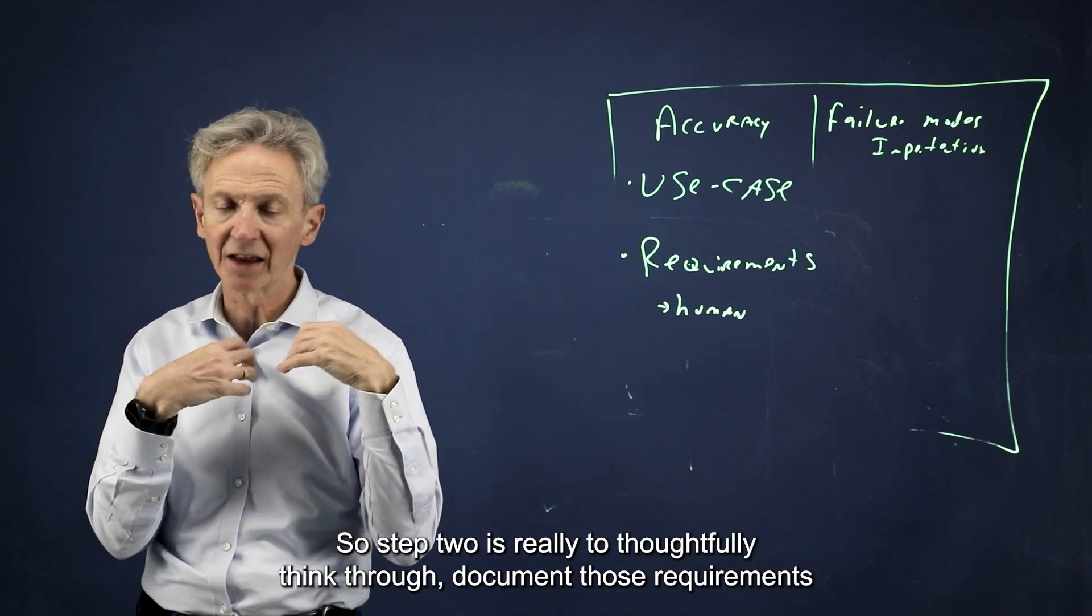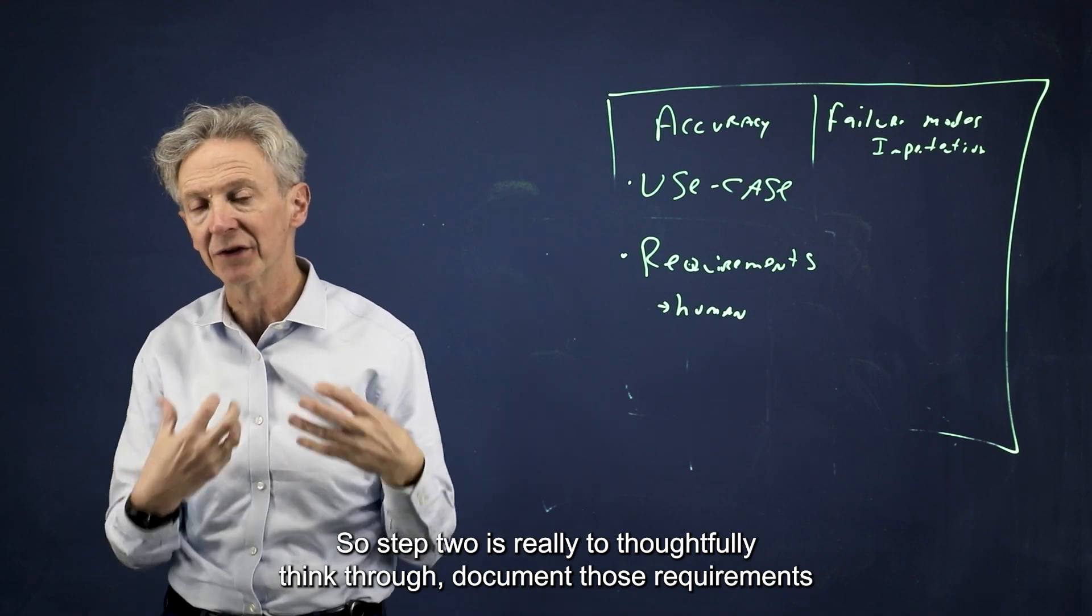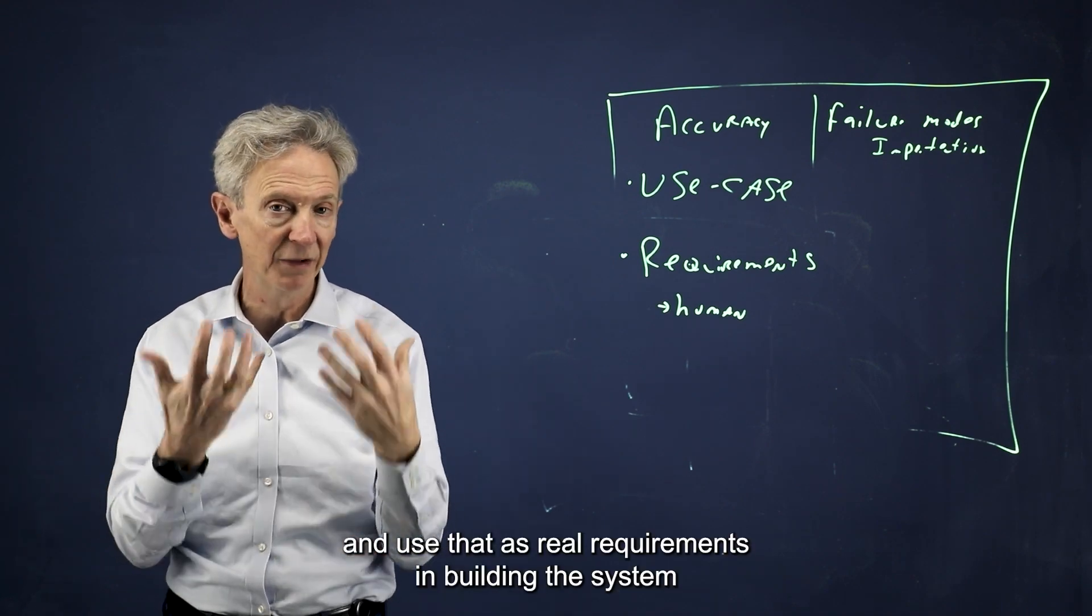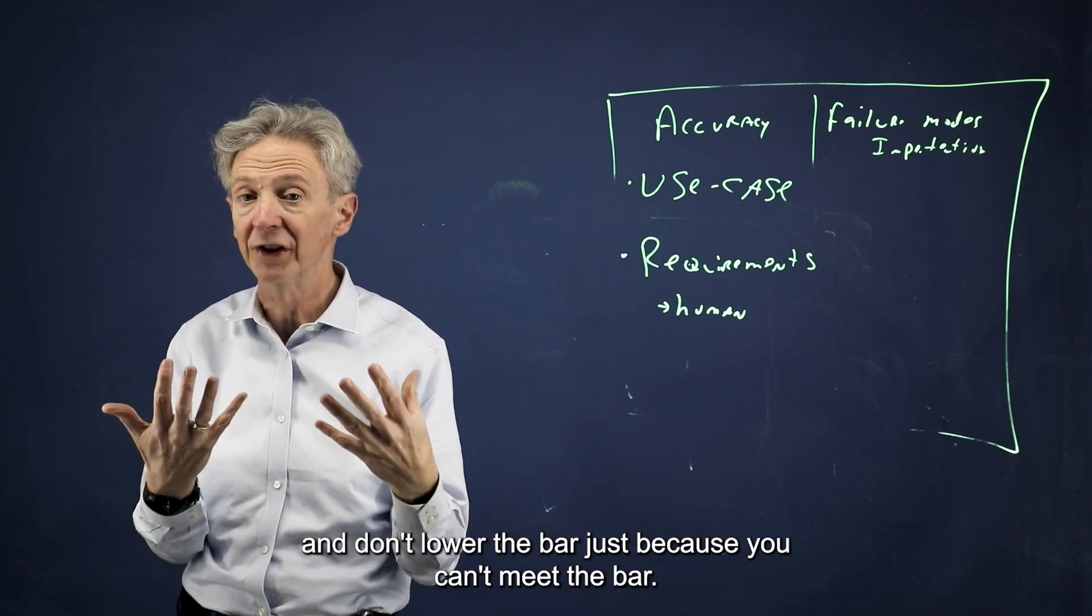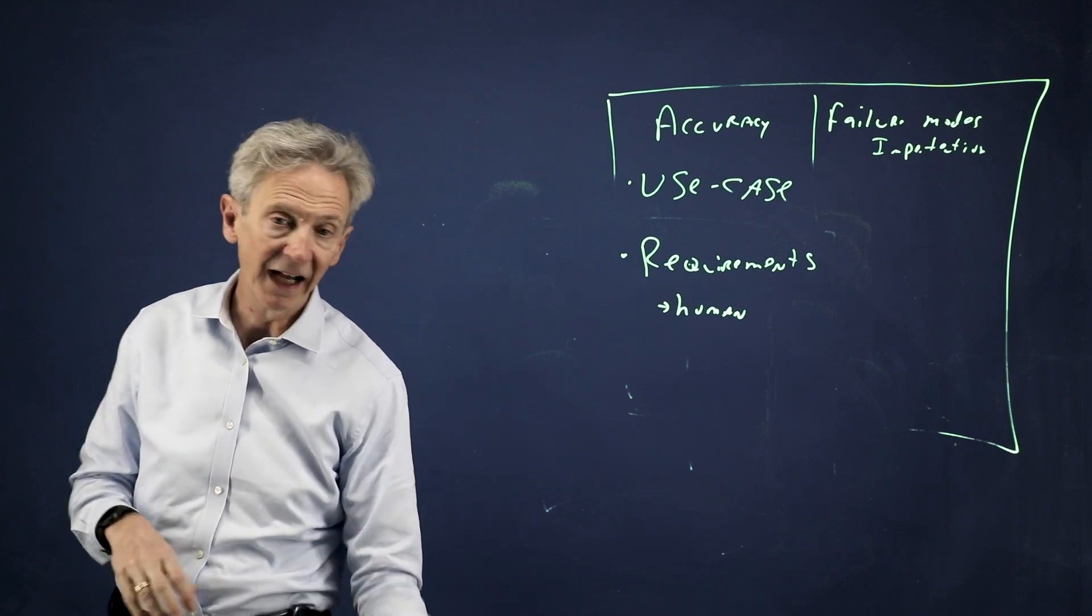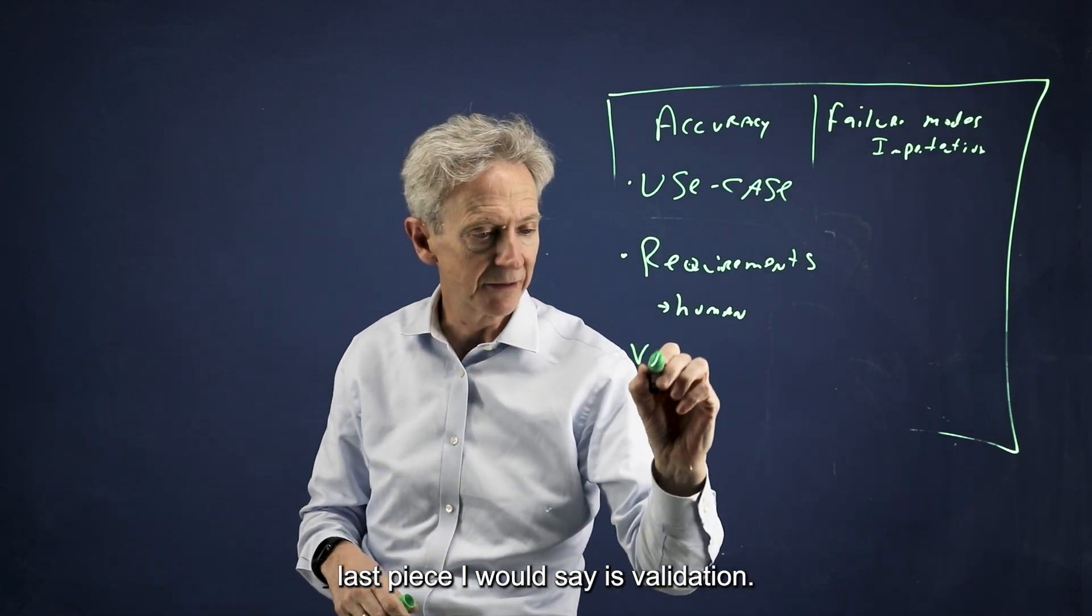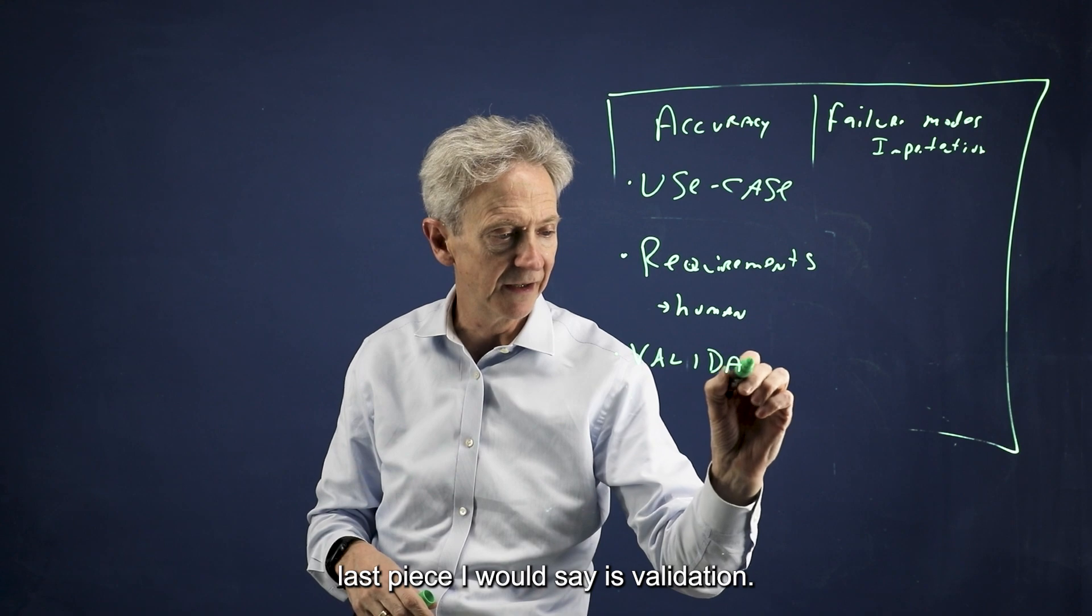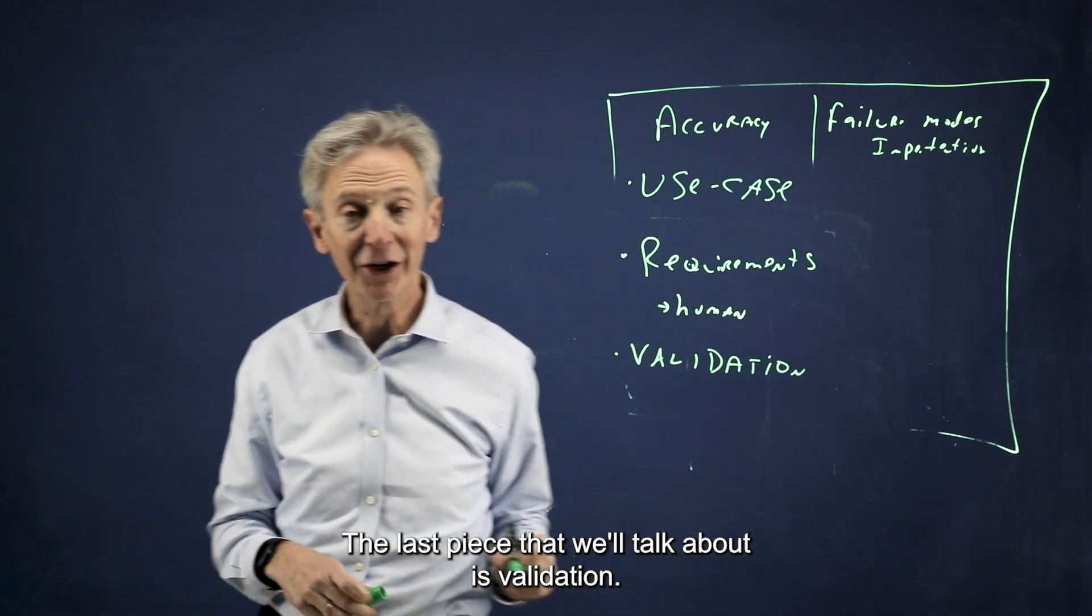So measuring the human performance at the task can be a nice way to set the requirement and have the AI system have to beat that requirement. Step two is really to thoughtfully think through, document those requirements and use them as real requirements in building the system and don't lower the bar just because you can't meet it.